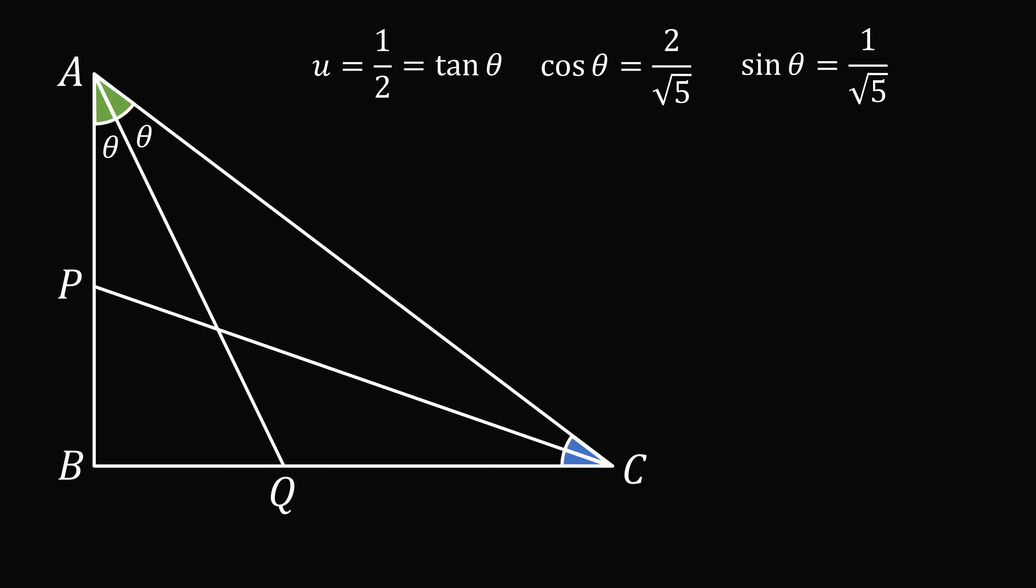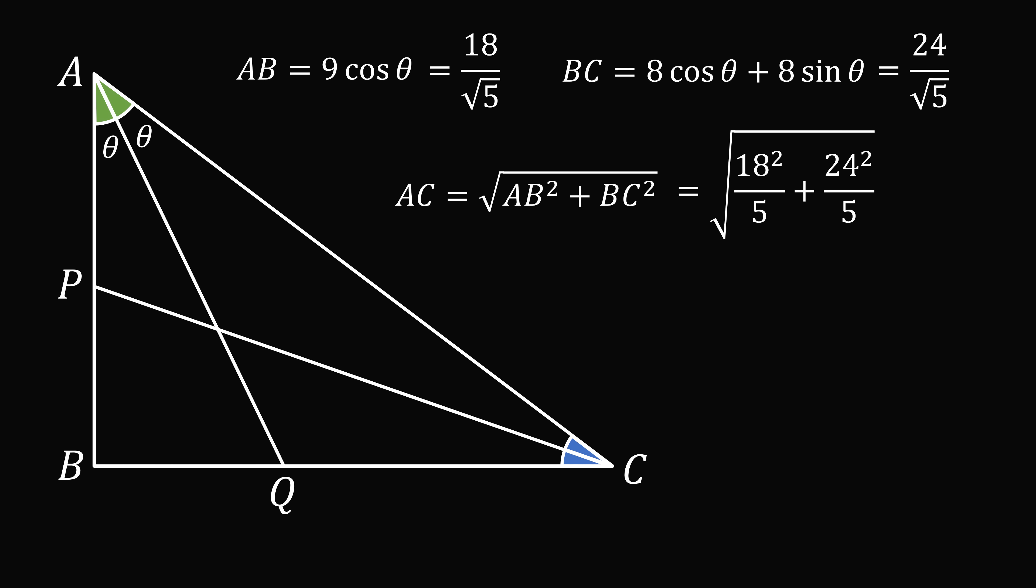We go back to our original setup, and we have equations for AB and BC, but we know what cosine theta and sine theta are now. So, AB is equal to 9 cosine theta. We substitute in, and we get that AB is equal to 18 divided by root 5. We have an equation for BC in terms of cosine theta and sine theta. We substitute in, and simplify, to get that BC is equal to 24 divided by root 5. We know what AB and BC are equal to, so we get that AC is equal to the square root of the sum of the squares of AB and BC. We substitute in, we get the square root of 18 squared divided by 5 plus 24 squared divided by 5. We do a little bit of arithmetic, and we get that AC is equal to 6 root 5, which is approximately equal to 13.416. And that's the answer.